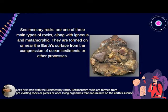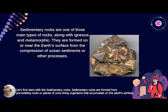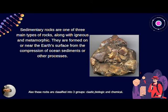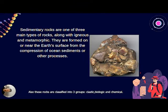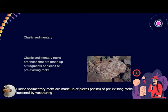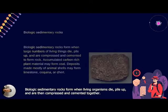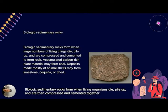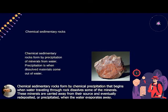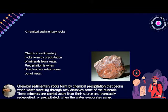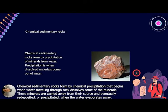Let's start with sedimentary rocks. Sedimentary rocks are formed from pre-existing rocks or pieces of once-living organisms that accumulate on the surface. These rocks are classified into three groups: clastic, biologic, and chemical. Clastic sedimentary rocks are made up of pieces of pre-existing rocks loosened and redeposited. Biologic sedimentary rocks form when living organisms die, pile up, and are compressed and cemented together. Chemical sedimentary rocks form through chemical precipitation, where water traveling through rock dissolves minerals that are then redeposited when the water evaporates.